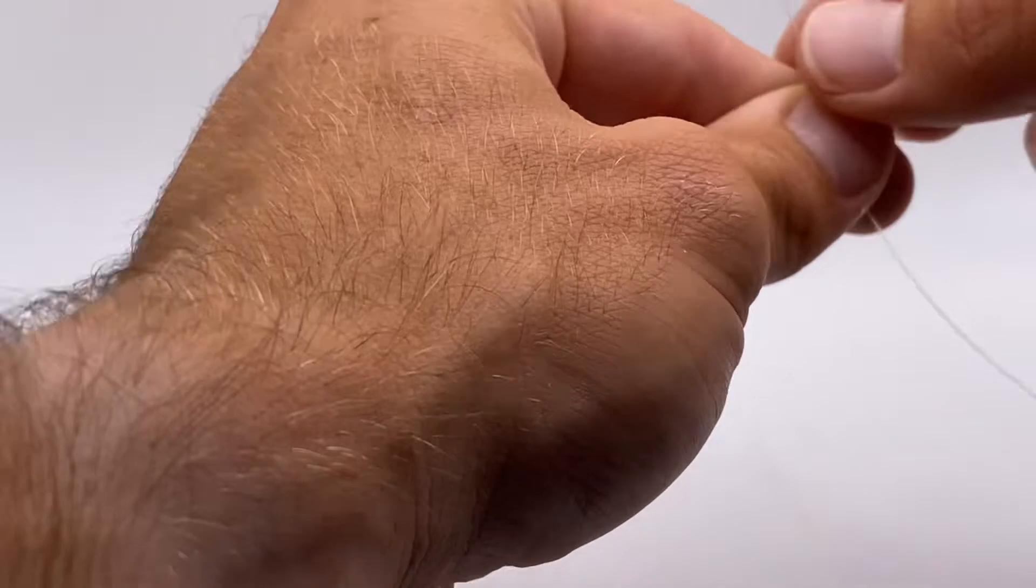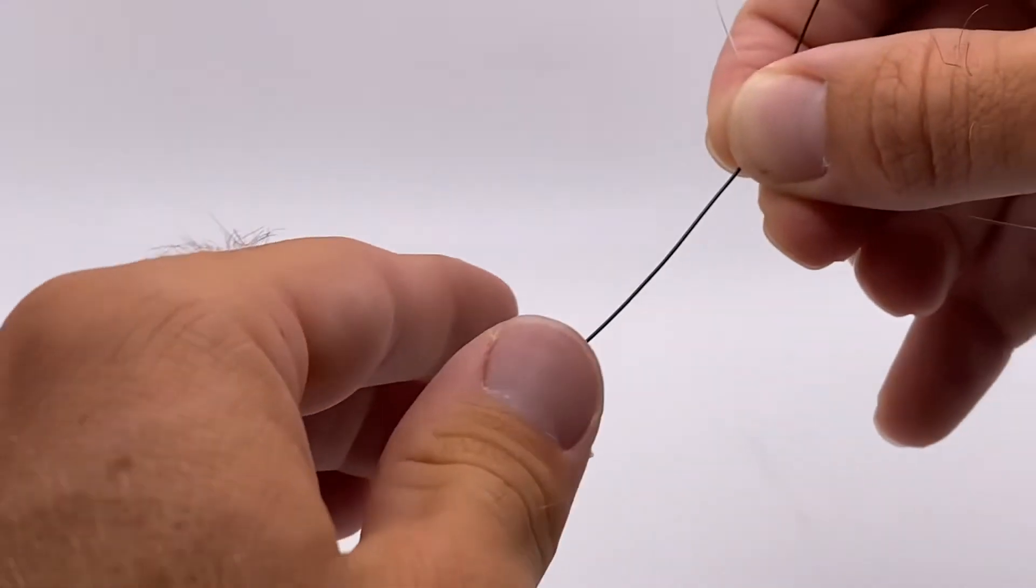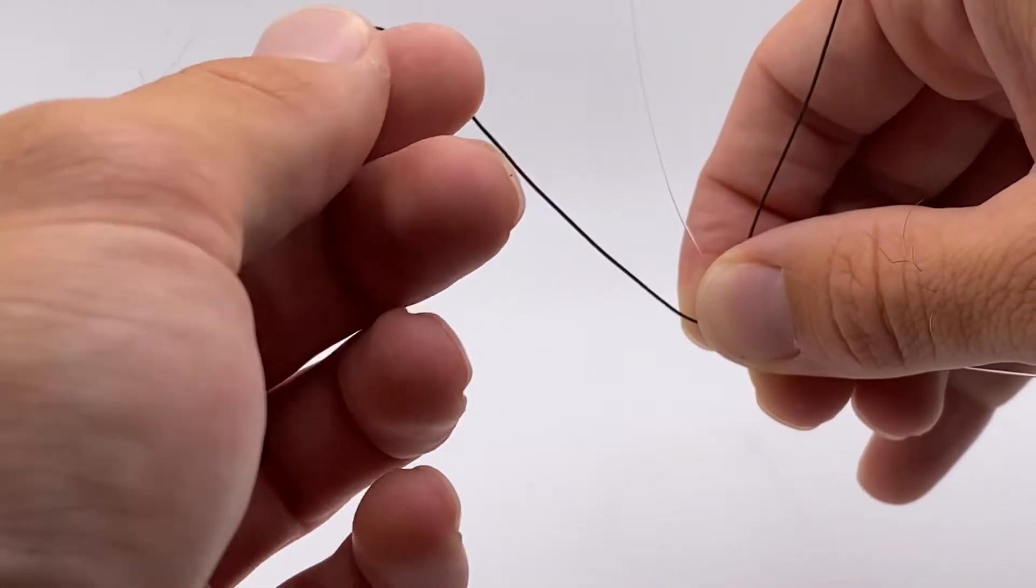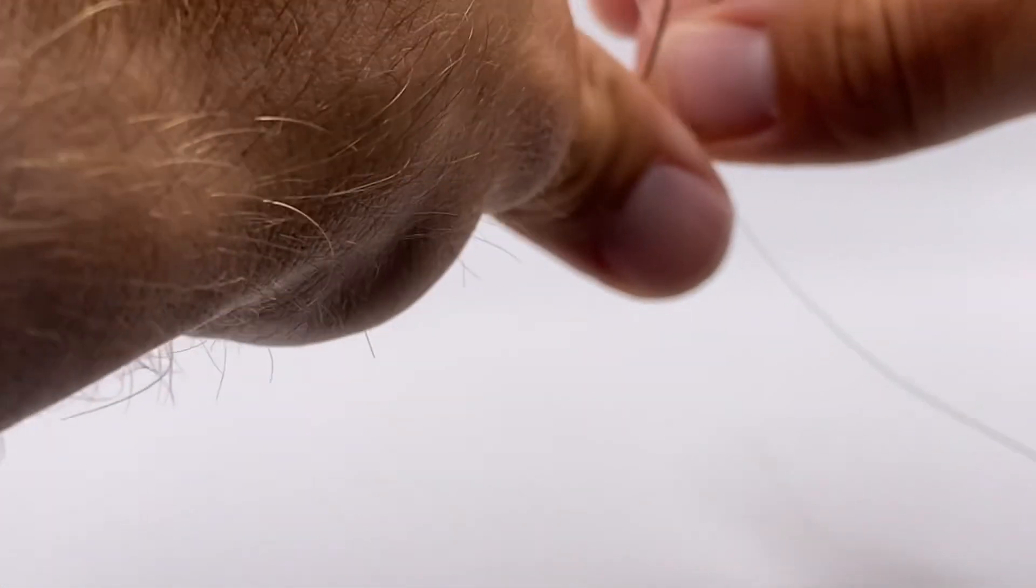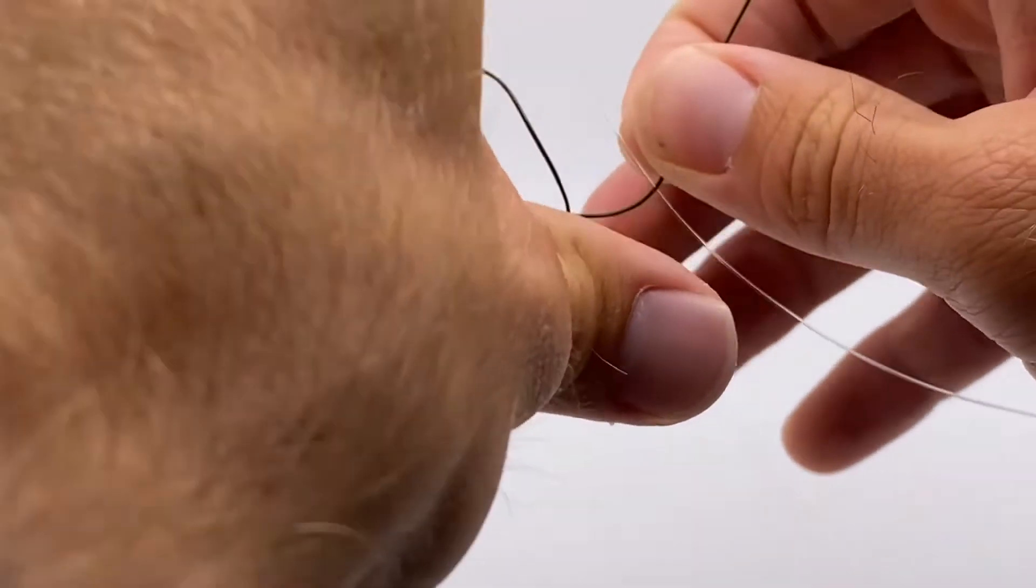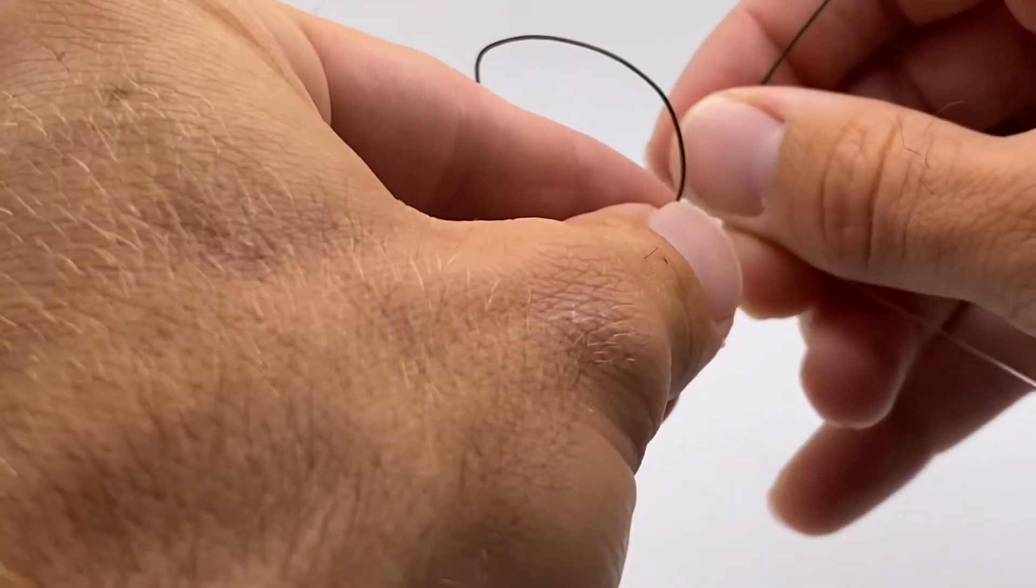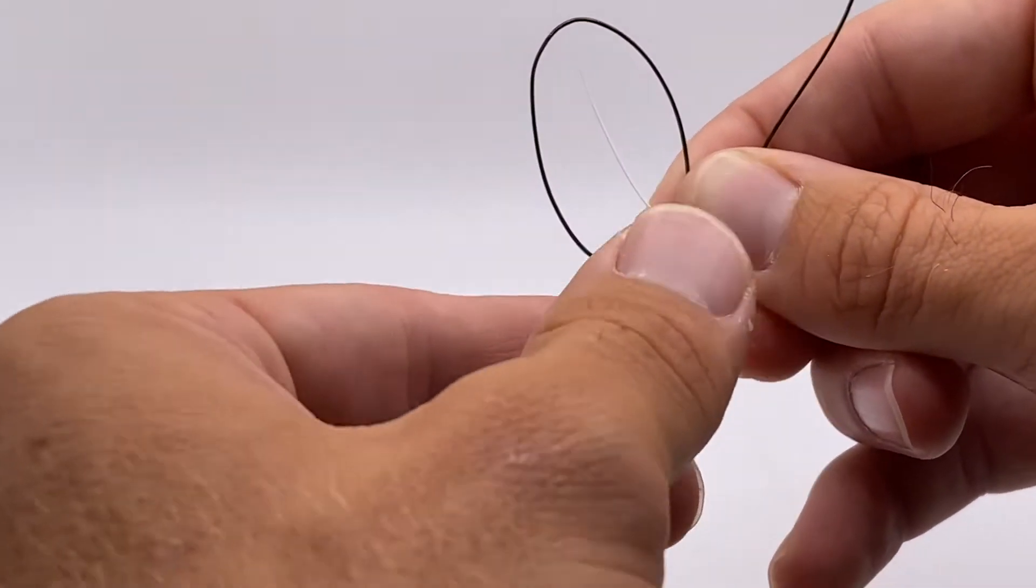I always like to start with the braided line because I think it's the easiest. So the first thing you do, you've got your lines crossed, you just make an overhand loop just like so. Literally, a nice simple loop just like that.